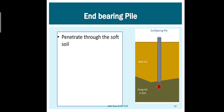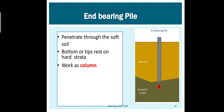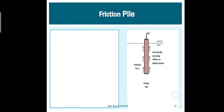In end bearing pile, the load penetrates the soft soil and the tip of the pile is inside the rocky stratum, so the load is directly transferred to the rock — it acts like a column. The ultimate load QU is equal to QP, the point bearing resistance. QP is also called tip bearing or base bearing, meaning the end point is bearing the entire load. QP is the end bearing or pile load resistance.